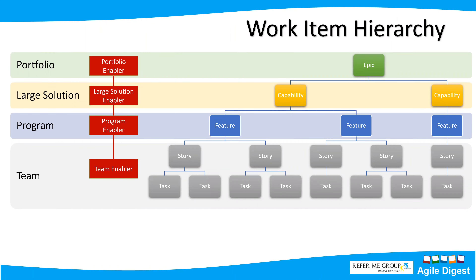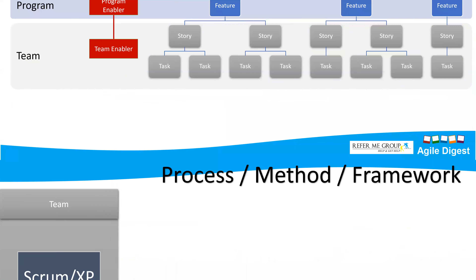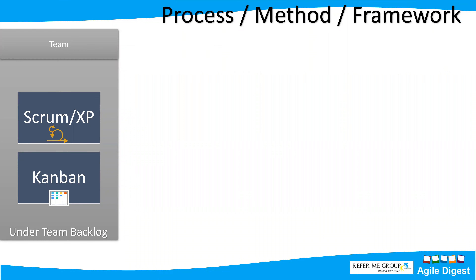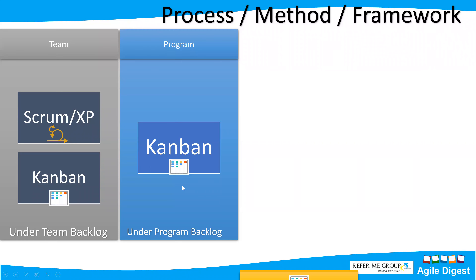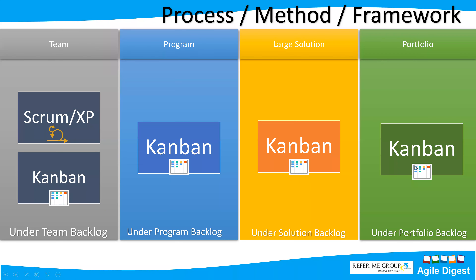In certification classes, which are two-day workshops, we do much more detailed analysis. Now, regarding the process or framework used at each layer: at the team level we primarily use Scrum, XP, or Kanban. At the program level, we use Kanban — we move all features through a Kanban board. At the large solution level, all capabilities flow through Kanban. At the portfolio, portfolio epics flow through the Kanban system.